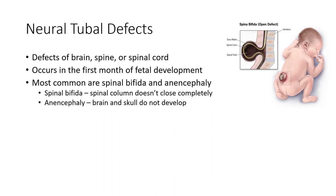A much more severe neural tube defect is called anencephaly. With this, the brain and skull do not develop — very little to no brain and skull matter develop at all. Anencephaly is fatal; the fetus will either be stillborn or die shortly after birth. Both spina bifida and anencephaly are picked up through genetic testing or on ultrasound later on.